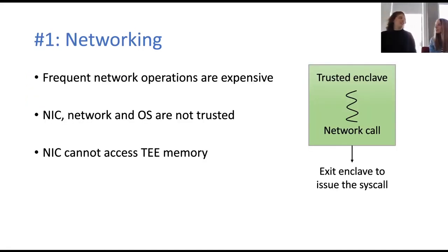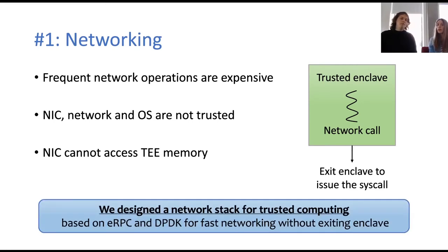Distributed systems have to constantly send messages between nodes. However, these messages are very expensive in trusted execution environments since the NIC and OS are not trusted. Therefore, you have to do a lot of security checks — both in hardware and software — when doing a system call. Furthermore, you cannot easily map the NIC into the trusted execution environment since then the NIC could leak data. That is why in Avocado we designed a secure network stack that relies on ERPC and DPDK, achieving fast networking while avoiding enclave transitions.